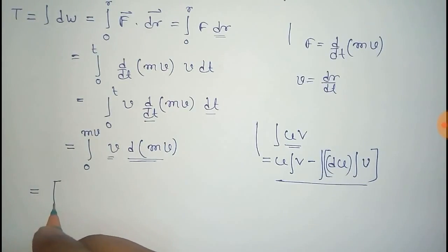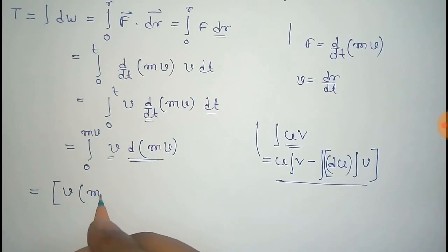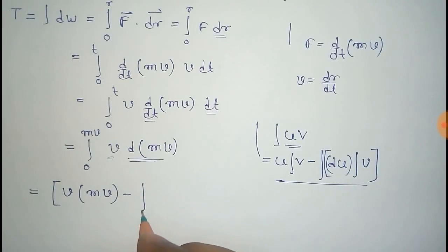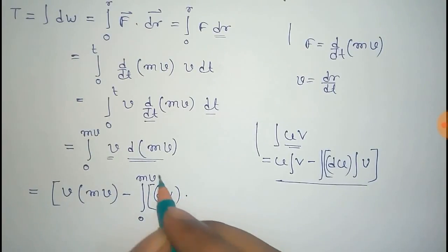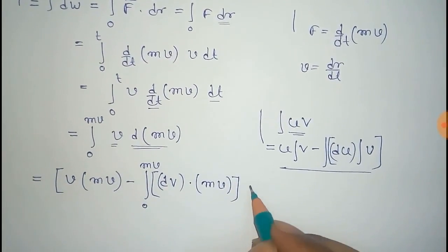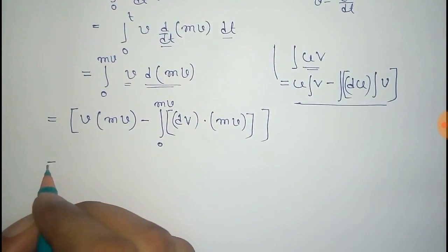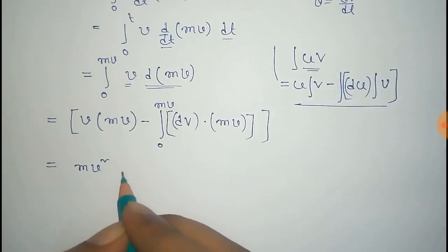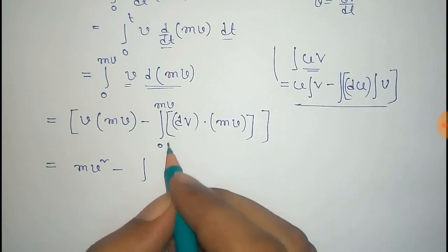Applying this formula, we take U as V and the other part as d(MV). So it becomes V into the integral of d(MV) — which is MV — minus the derivative of V, that is dV, times the integral of the second part MV. So that gives MV squared minus the integral of MV dV.